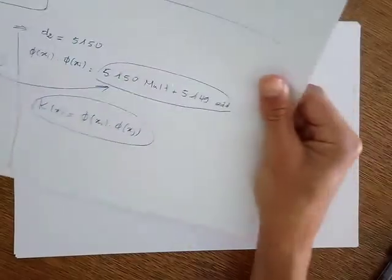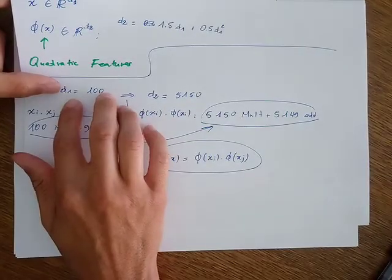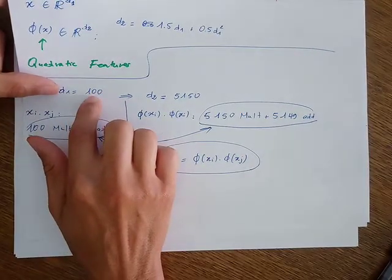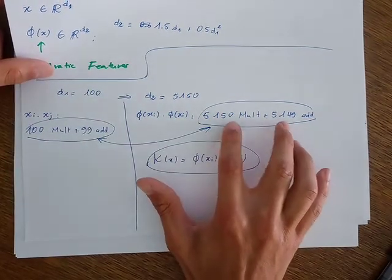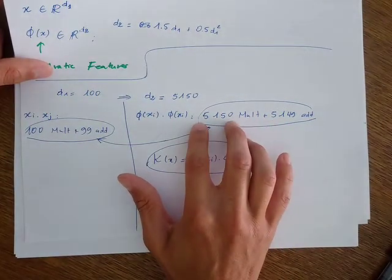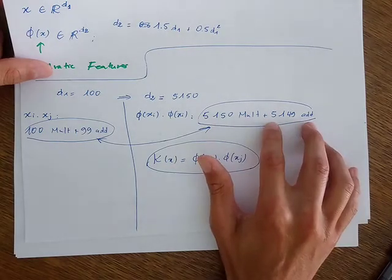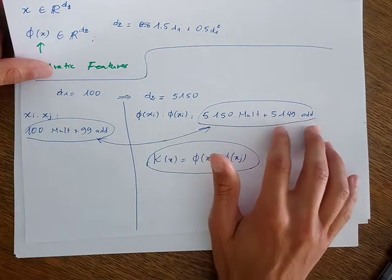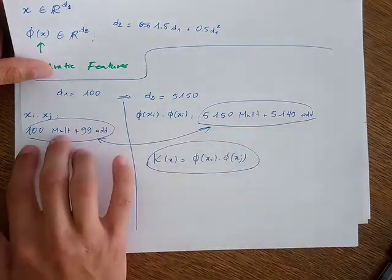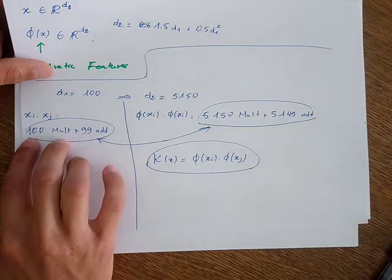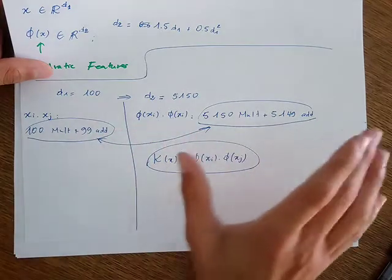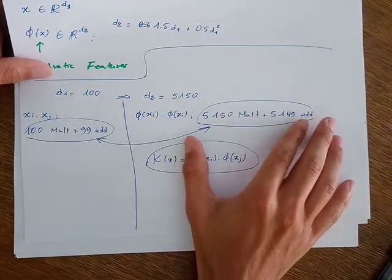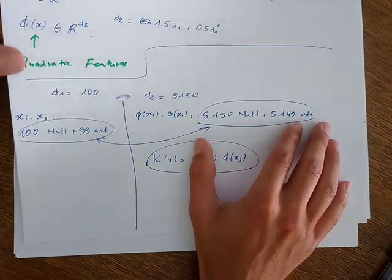We compared the number of operations required. In the original feature space with 100 dimensions, using quadratic features requires almost 5,000 multiplications and 5,000 additions, whereas in the original feature space it took only 100 multiplications and almost 100 additions. So this large number of operations causes problems.